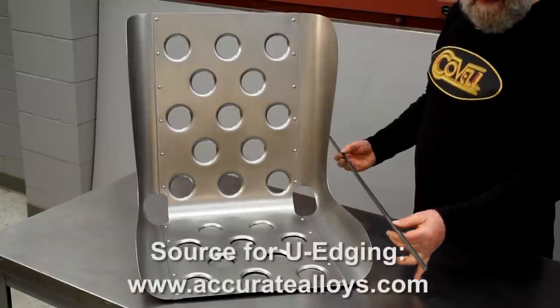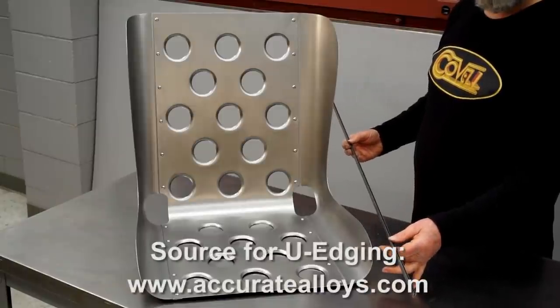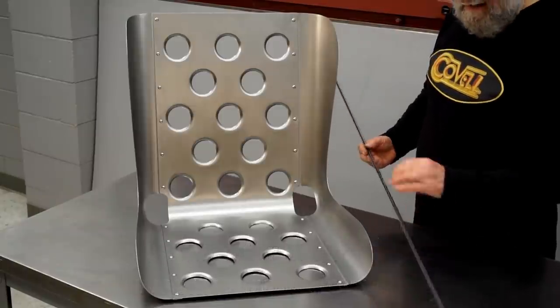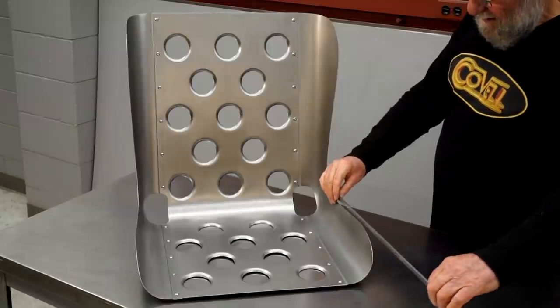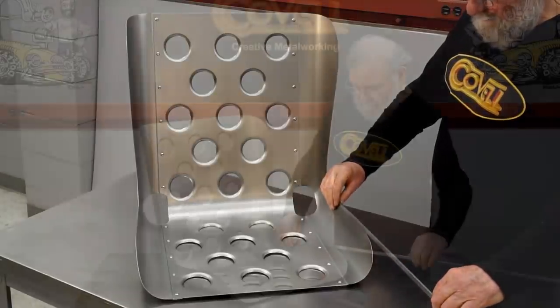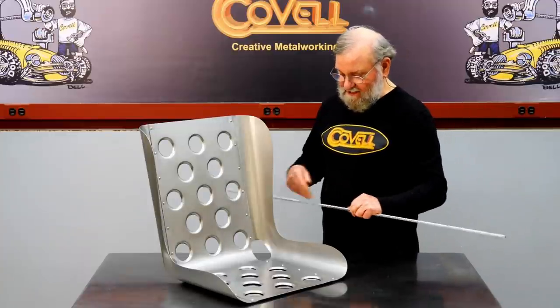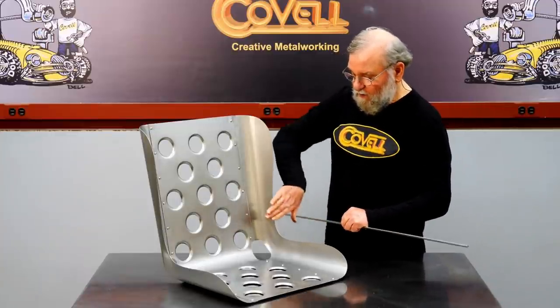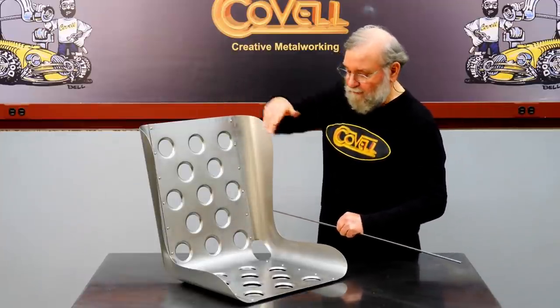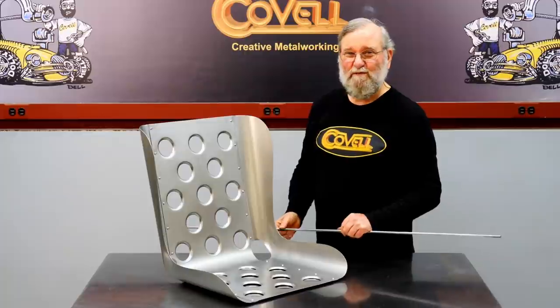I found this U-channel. It's designed to cover the edge of expanded metal or perforated metal, and it's just the right size to go over the edge of our bomber seat. So the tricky part of course is going to be to put the bends in it, one in this plane, and a couple in this plane.